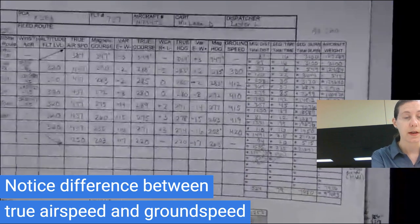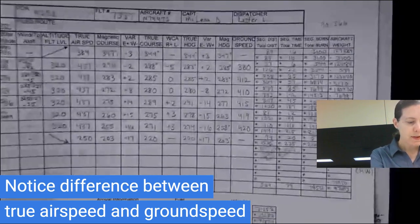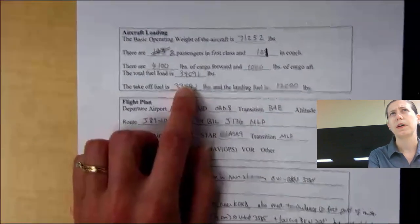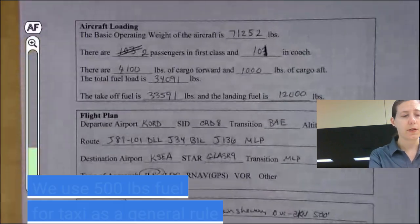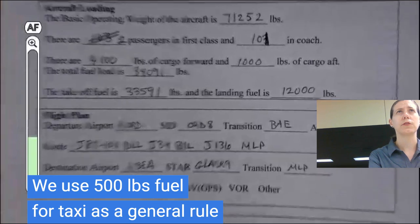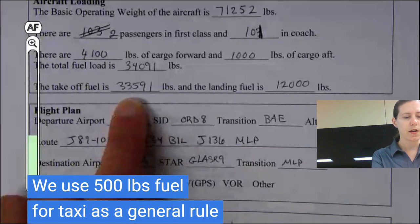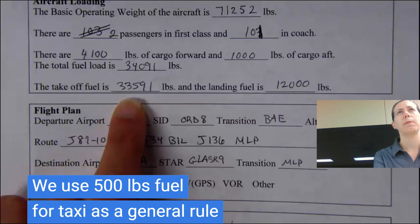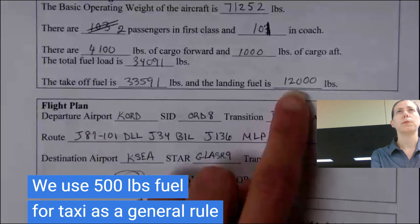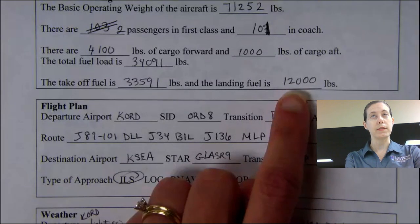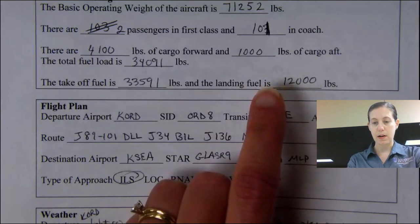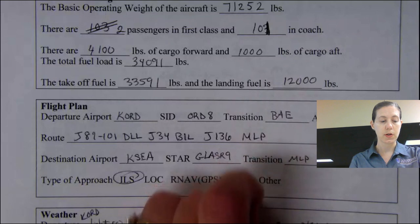On account of the headwind, I had to give you even more fuel. Your planned fuel load is 34,091 pounds, which includes 500 pounds for taxi fuel — our standard amount. So you're going to be taking off with about 33,591 pounds. Because of all that fuel planned to your most distant alternate plus the 45-minute reserve, you're going to be landing with about 12,000 pounds of fuel on board. So we've got plenty of fuel in case the weather in Seattle isn't great.